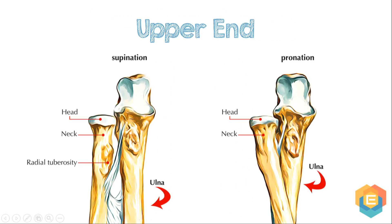The upper end provides the head, neck, and radial tuberosity. The head of the radius bone is formed like a disc and is covered by an articular hyaline cartilage. It articulates superiorly along with the capitulum to create the humeroradial articulation. The circumference of the head is smooth and articulates medially along with the radial notch of the ulna.